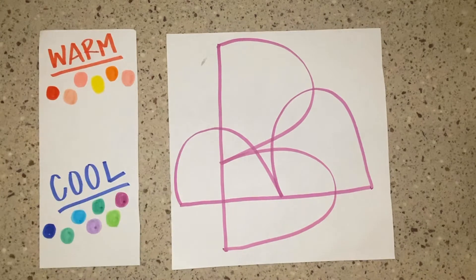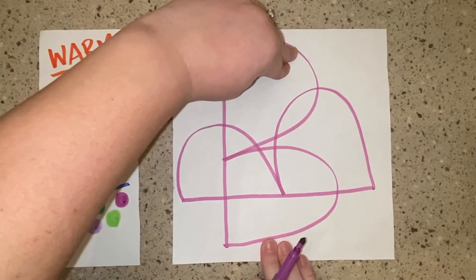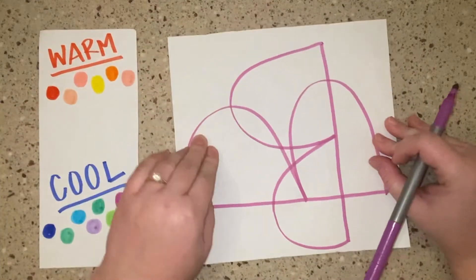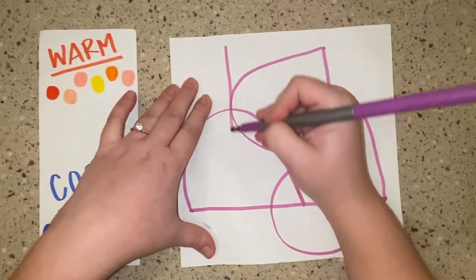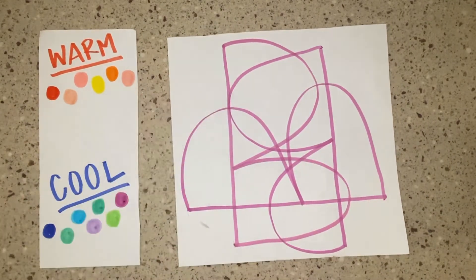Now that I've drawn two Bs, I'm going to rotate it once more. Now I'm going to draw a third B, overlapping, creating all these abstract sections.